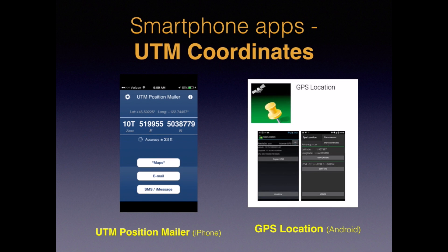Here are two free apps that show your current UTM coordinates and let you email or text your position. If you had one of these apps and a map with a printed UTM grid, you could always plot your exact position on the map and never get lost — that is a powerful navigation tool. Also, if you were lost without a map and had cell phone coverage, you could tell 911 your exact location and wait there for a rescue.